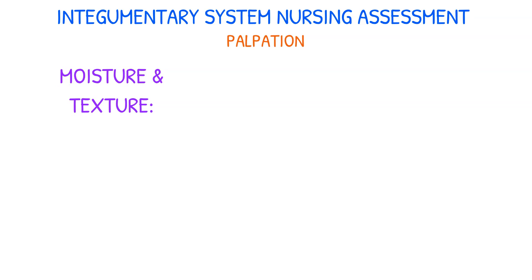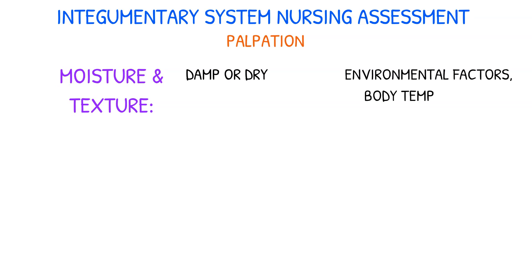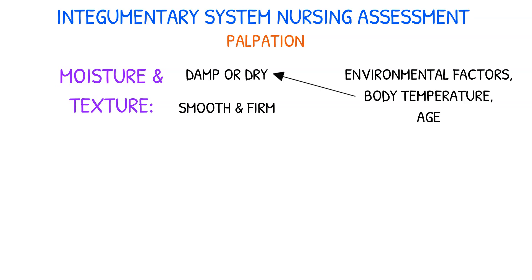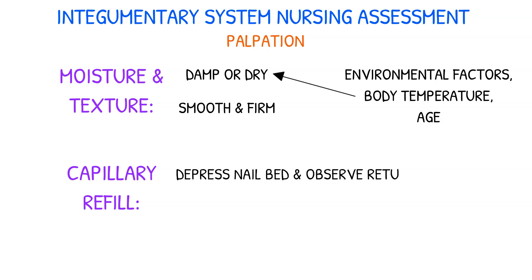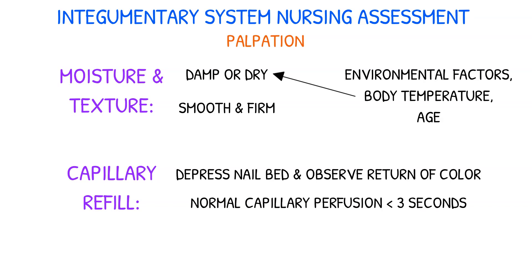Moisture and texture are also important to assess. Skin can be damp or dry depending on environmental factors, body temperature, and age. For texture, the skin should feel smooth and firm with evenly thin surfaces in most areas. Lastly, capillary refill can be checked by depressing the nail bed and observing the return of color. Normal capillary perfusion will allow the color to return within 3 seconds.